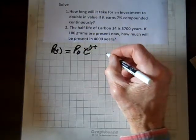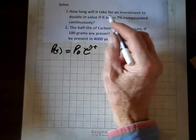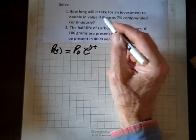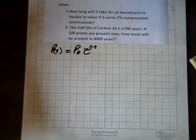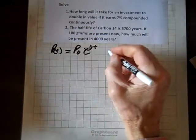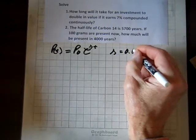And where P sub 0 is the initial amount, in this case it says how long will it take for an investment to double in value if it earns 7% compounded continuously. So our rate is 0.07.